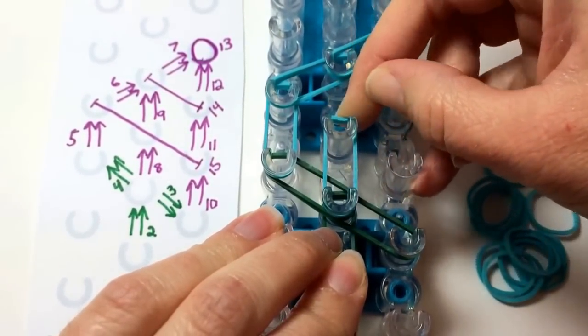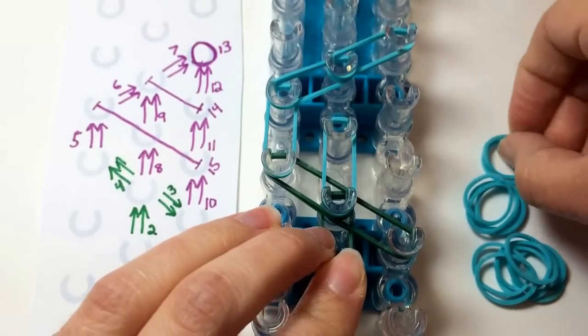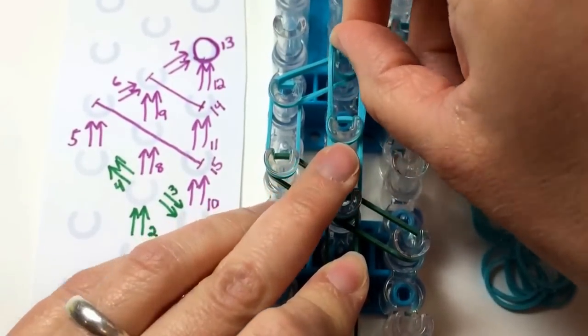From the center peg, two more rubber bands forward. And again, two more.